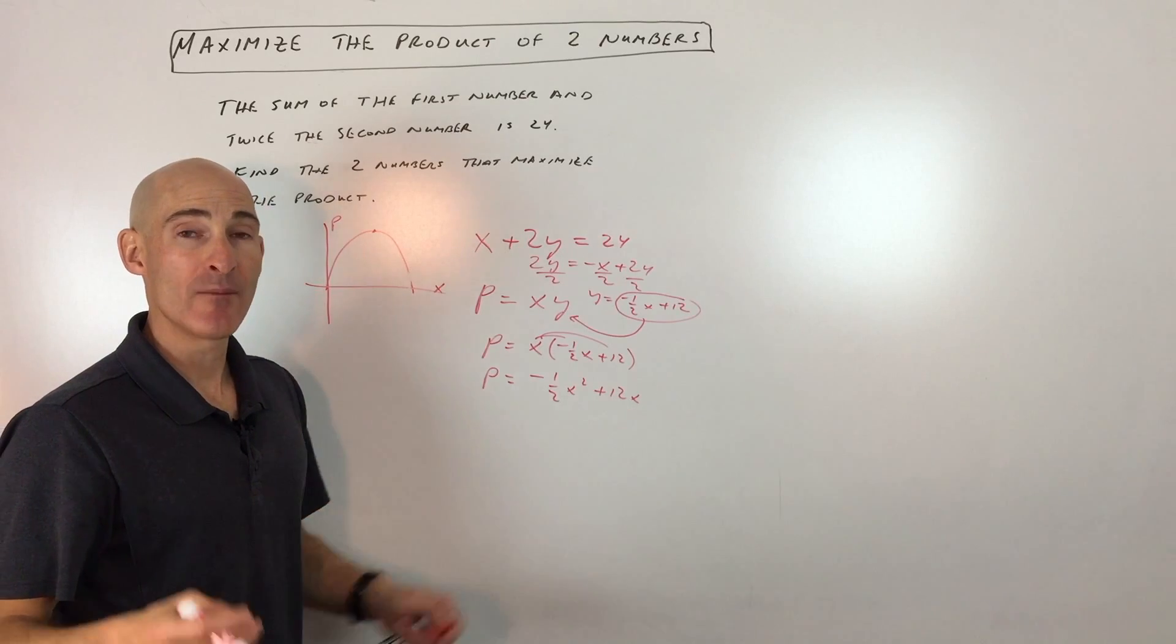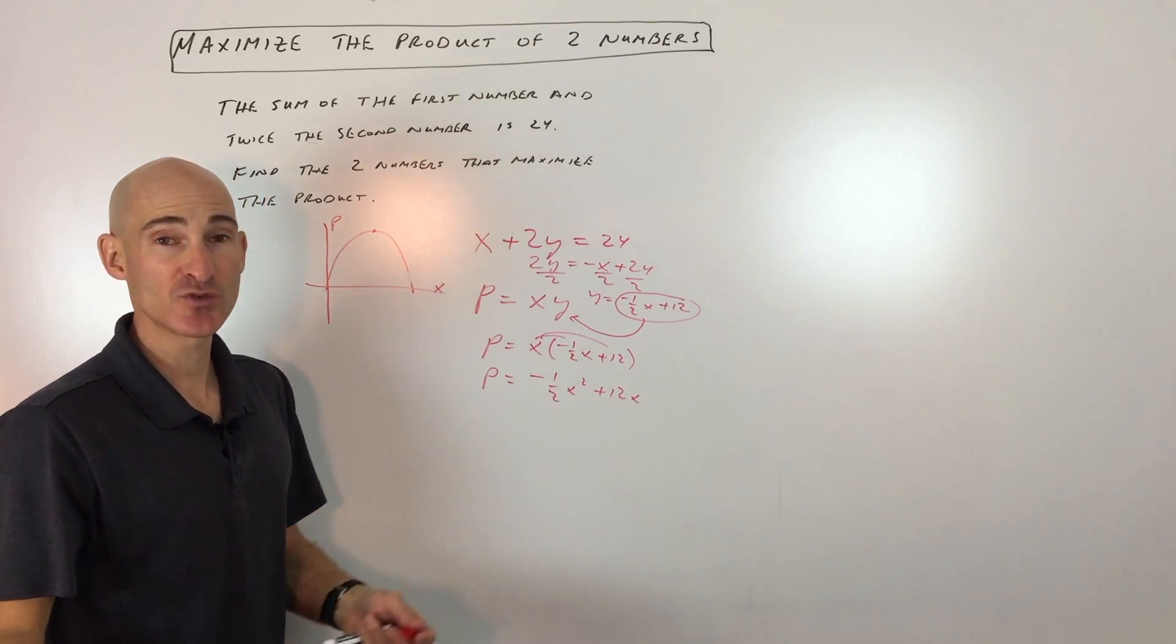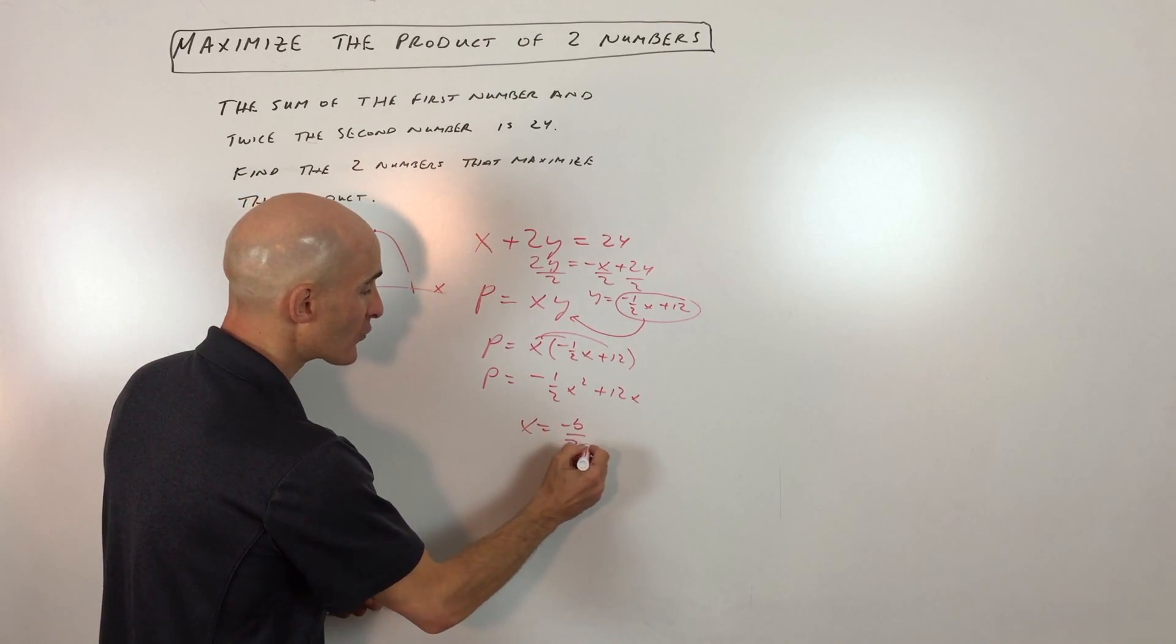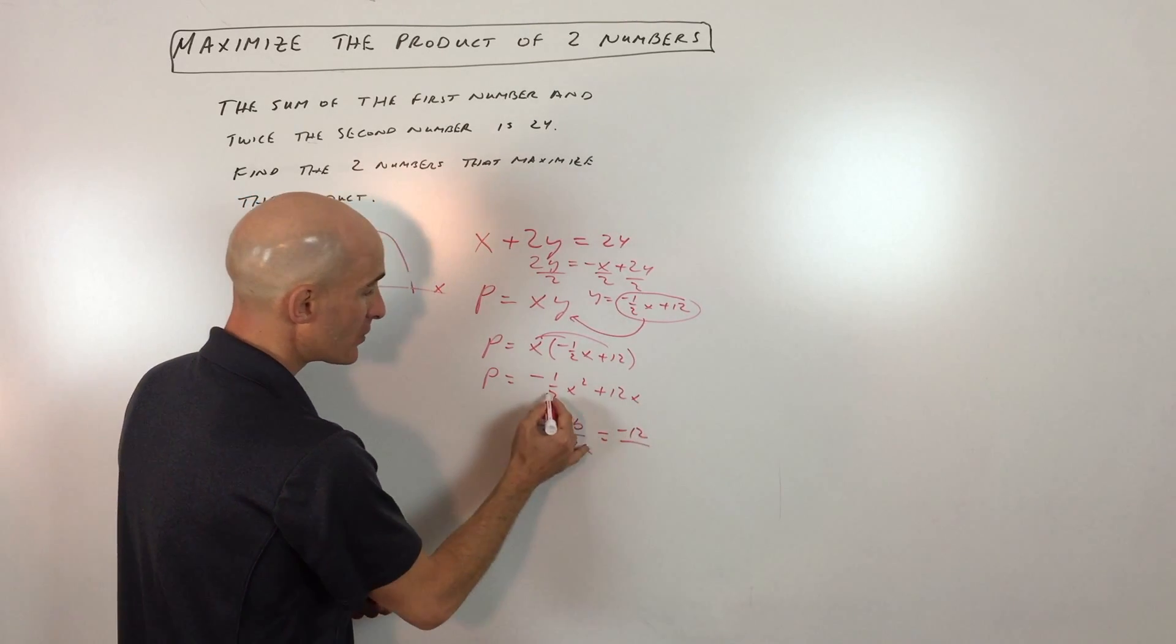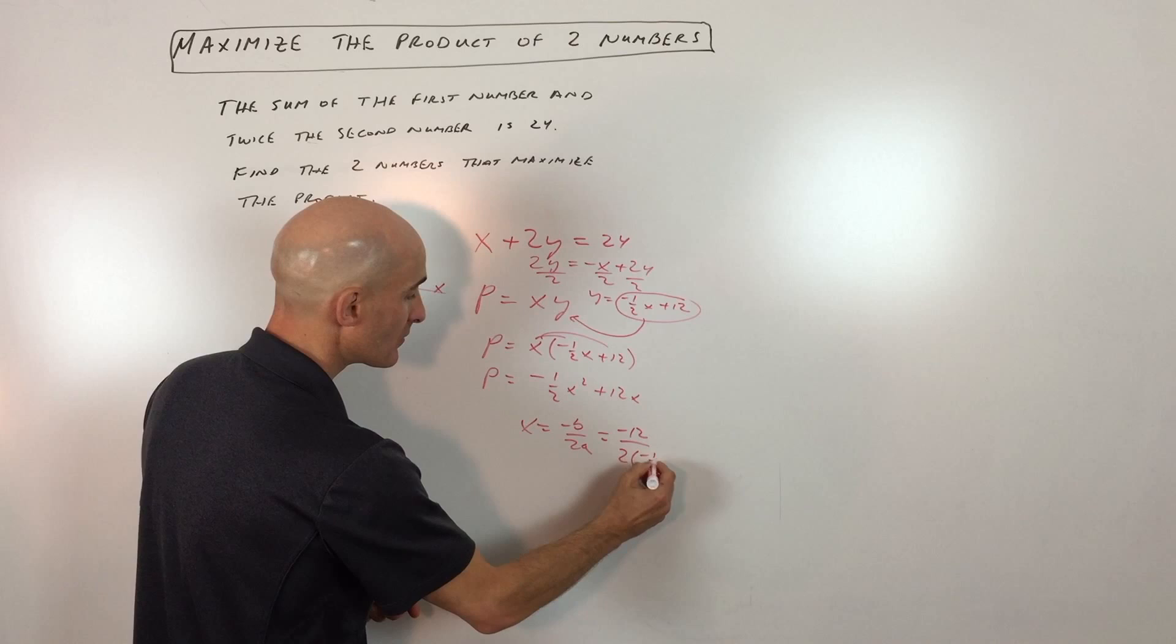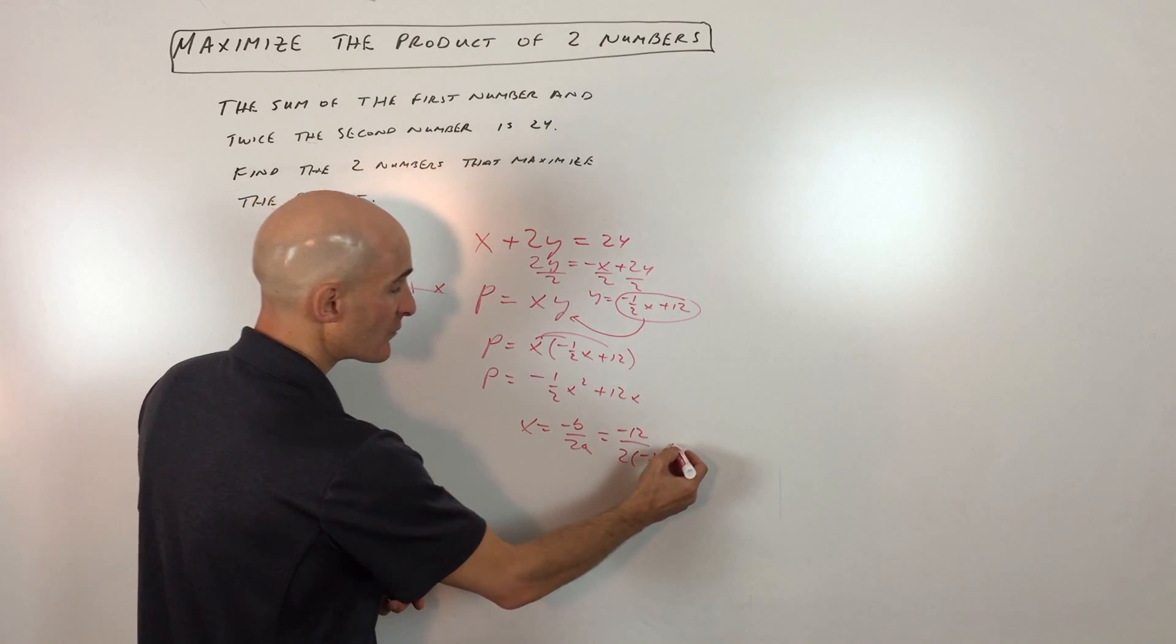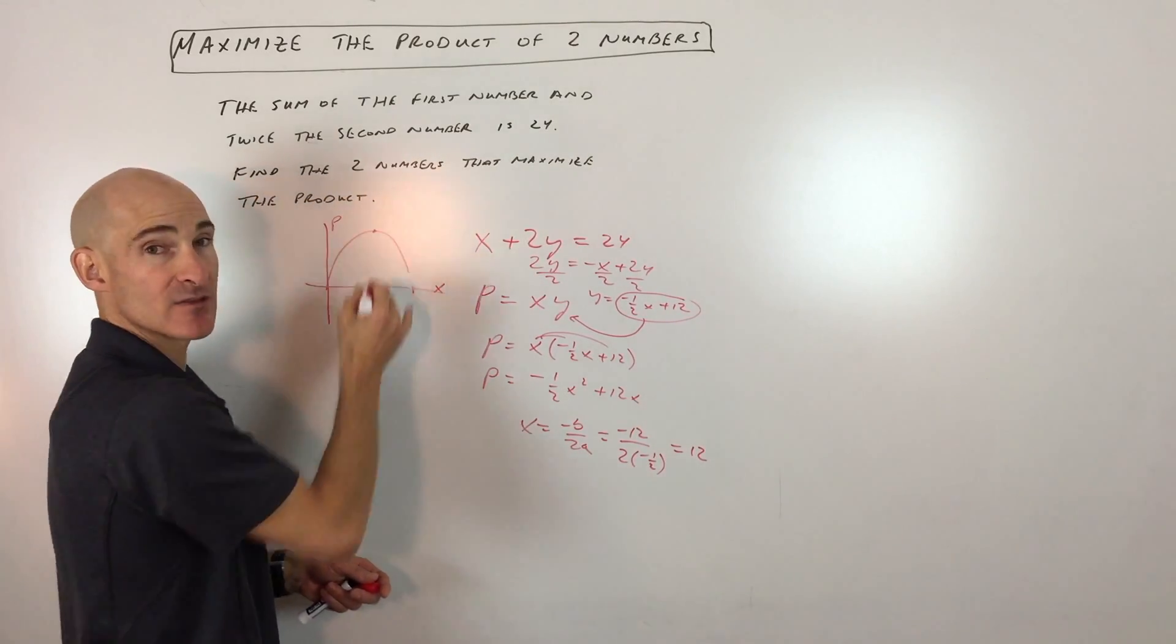Now there's a couple different ways to do this problem. One way to do it is to find the vertex any which way you want. For example, you could use the formula x equals negative b over 2a. If you use that technique, it would be the opposite of 12 over 2 times negative one-half, which would be negative 1. Negative 12 divided by negative 1 gives us positive 12. So you can see when x is 12, that's going to give us the maximum product.